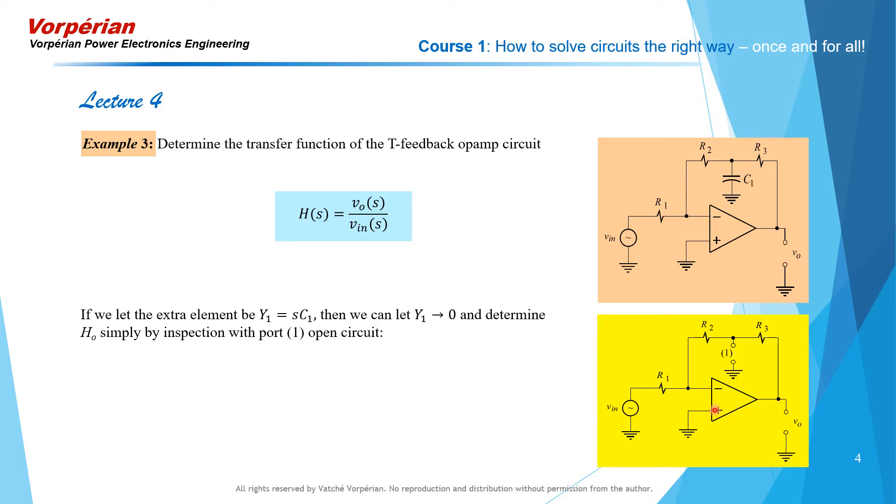And since this is an ideal operational amplifier, this calculation yields simply the voltage gain of an inverting operational amplifier: minus R2 plus R3 divided by R1.